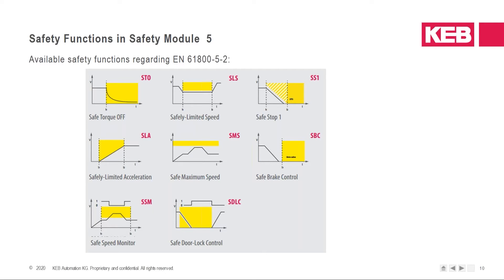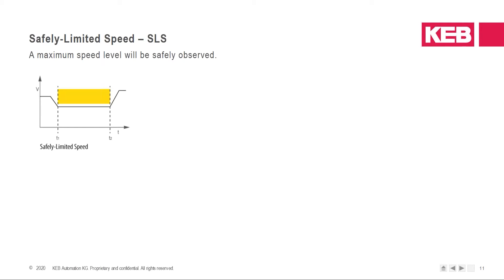Which safety functions do we have in safety module 5? These are: STO, safe limited speed, safe stop 1, safely limited acceleration, safe maximum speed, safe brake control, safe speed monitor, and safe door lock control. The important function is safely limited speed — SLS. The maximum speed level will be safely observed. If the actual speed exceeds the safe speed limit, an error is triggered. The function can be disabled by digital input or safe bus system.